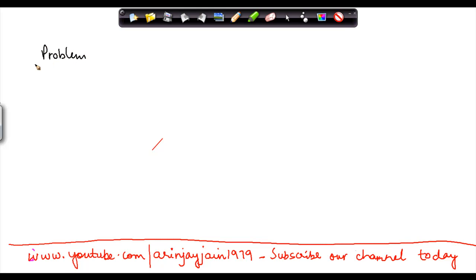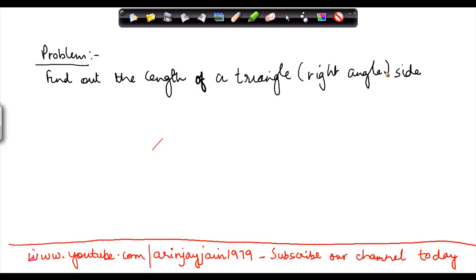Let's take a problem on a right-angle triangle. Find out the side AB of a triangle if the triangle is right-angled.